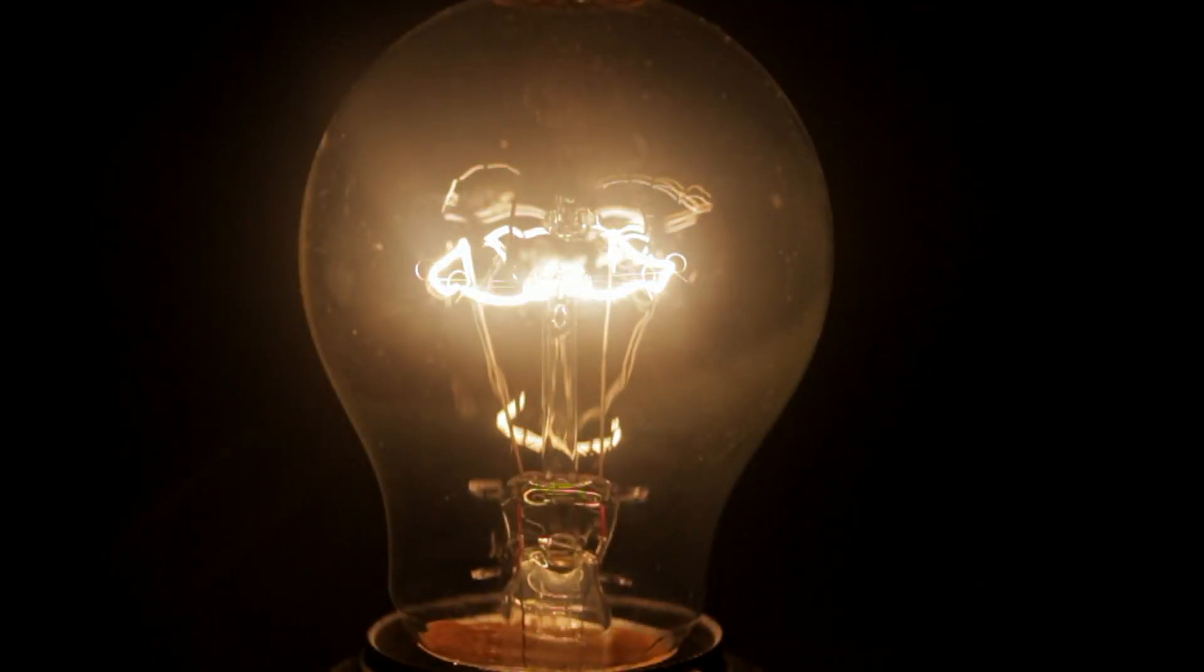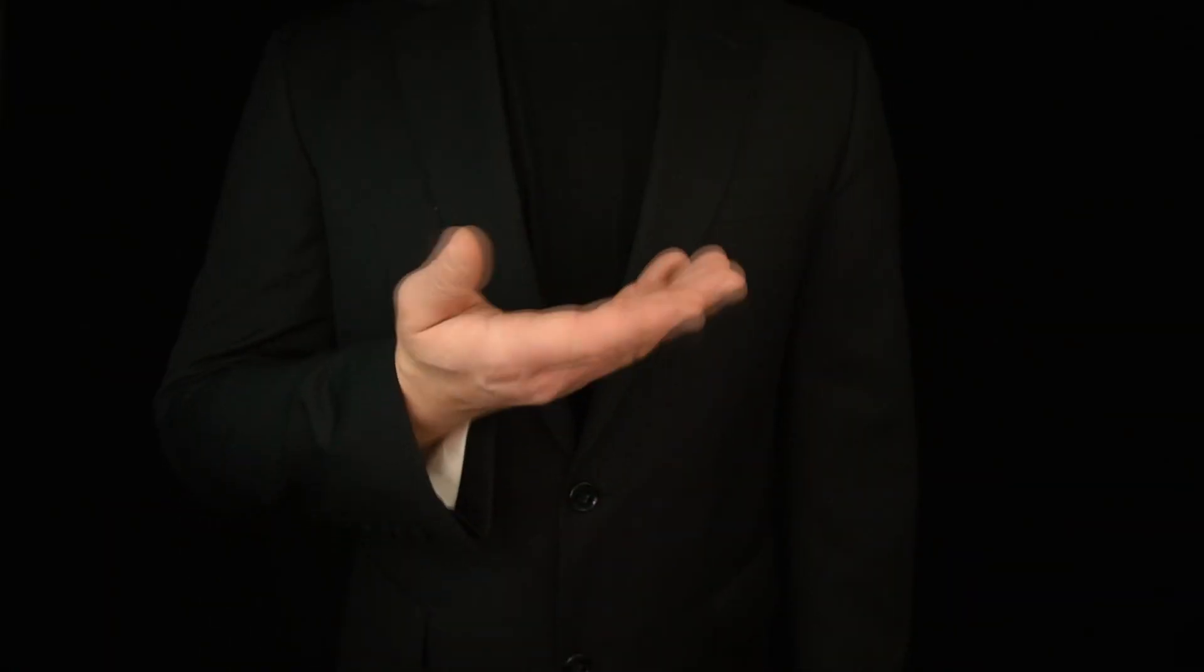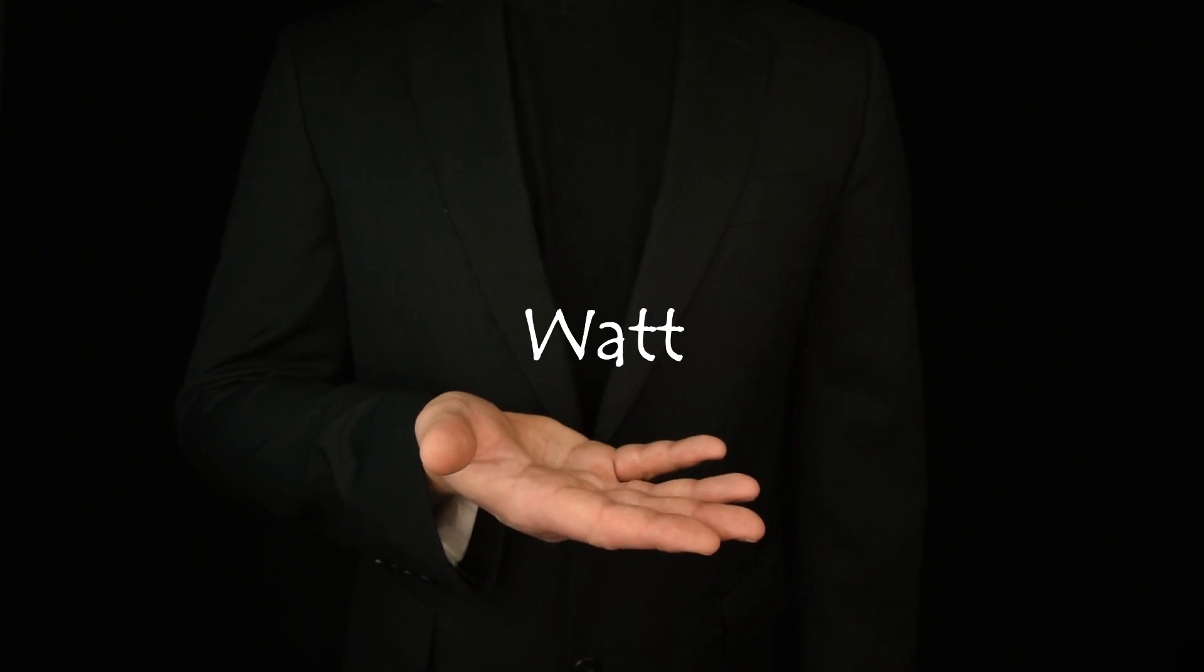This electricity is called alternating current or AC current, and it is about AC 220 volts. Now, the second question, what is voltage, ampere, and watt in electricity or current?